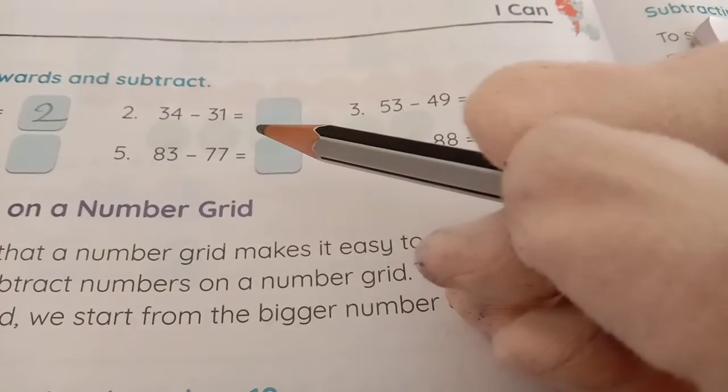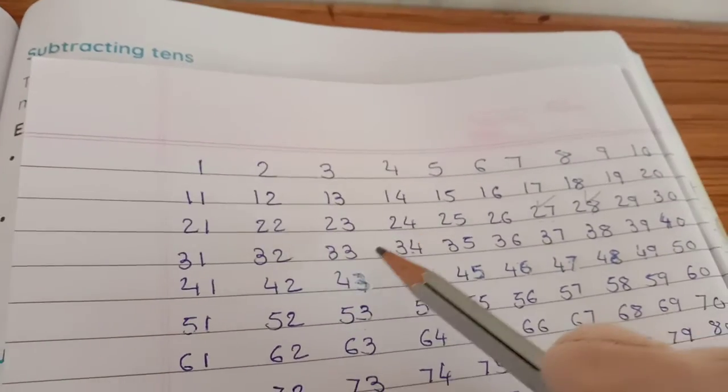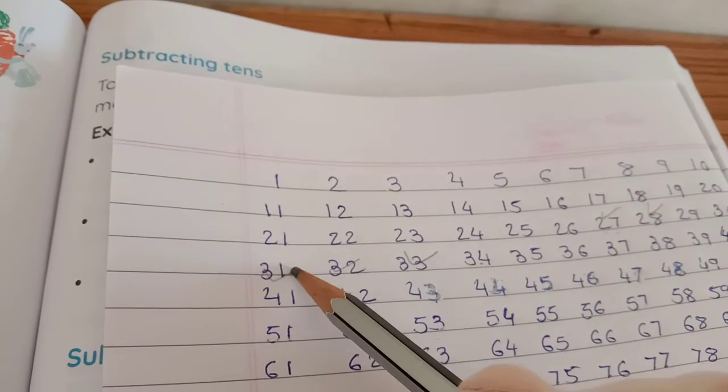Now next our question is 34 minus 31. So 34 number is here. We have to go back side. 33, 32 and 31.